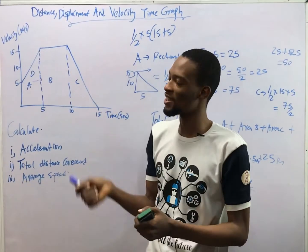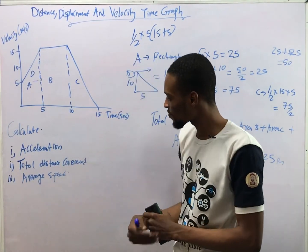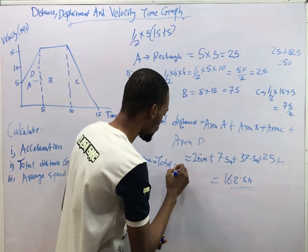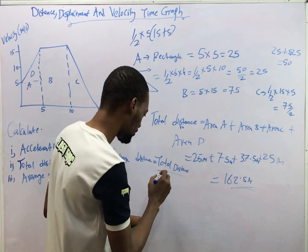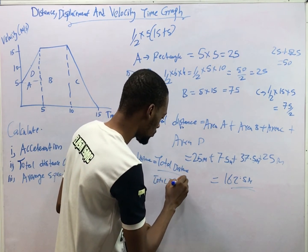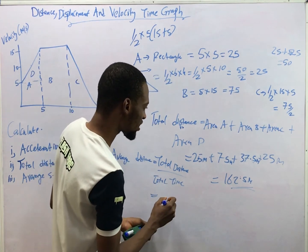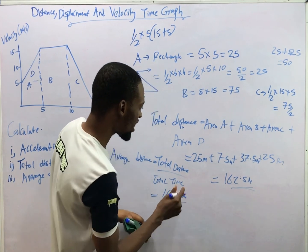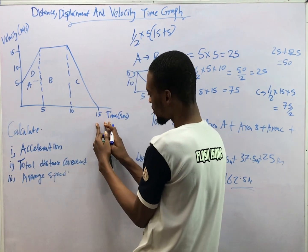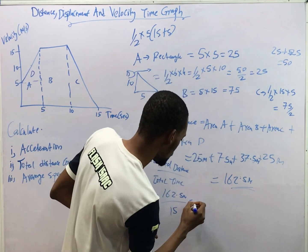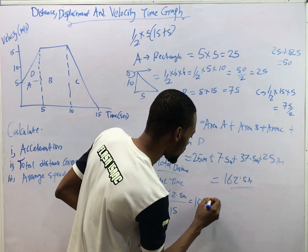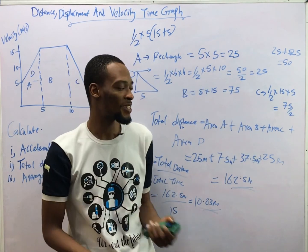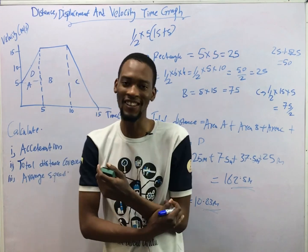That's the total distance covered. Now for average speed: average speed equals total distance over total time. Total distance is 162.5 meters and total time is fifteen seconds, so average speed equals 162.5 divided by fifteen, which gives approximately 10.83 meters per second. I hope you enjoyed this video — thanks for watching, and feel free to subscribe to this channel for more physics. Thank you.